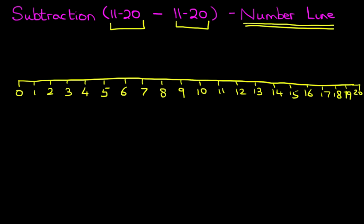Okay, just about get that in. So there's 20 we've got there and that is our number line from 0 to 20.